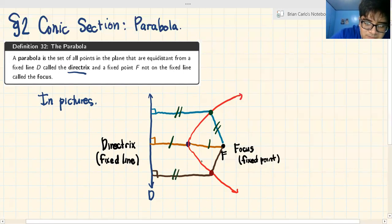A parabola is the set of all points in red that are equidistant or has an equal distance from a fixed point called the focus to the fixed line called the directrix.